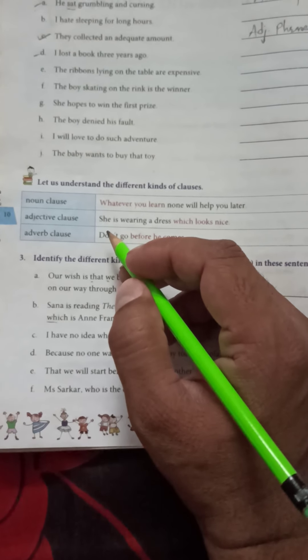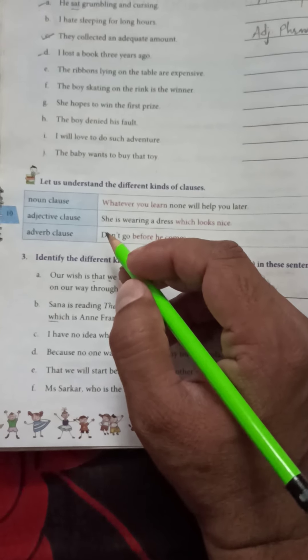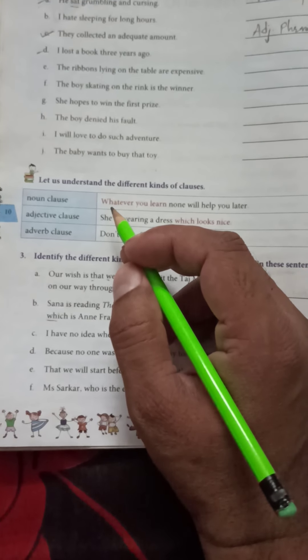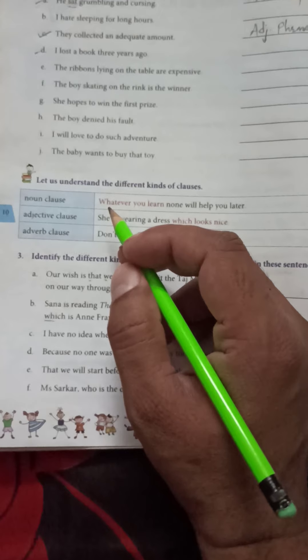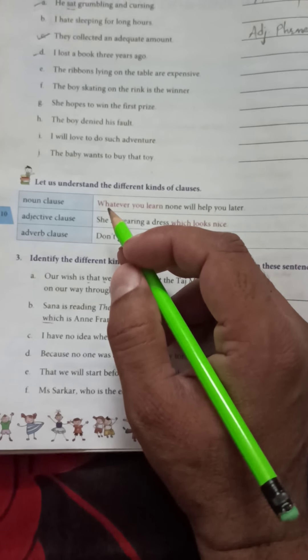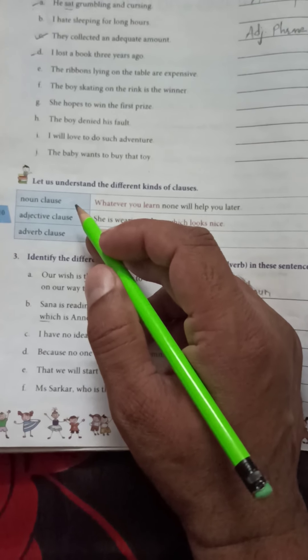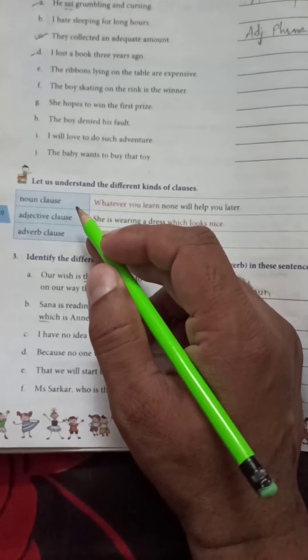What is clause means? In a sentence where you find a subject, a verb, and a group of words, that group of words is called clause. And when in a sentence a group of words used as a noun is called noun clause.